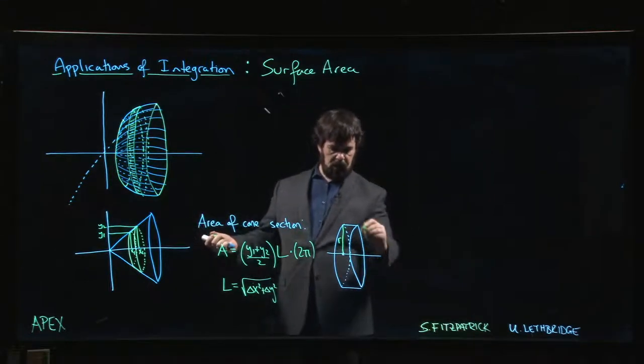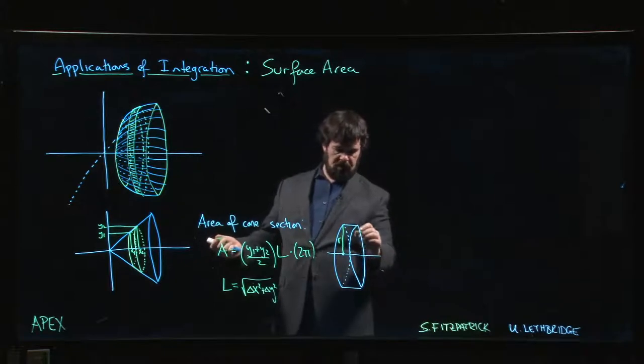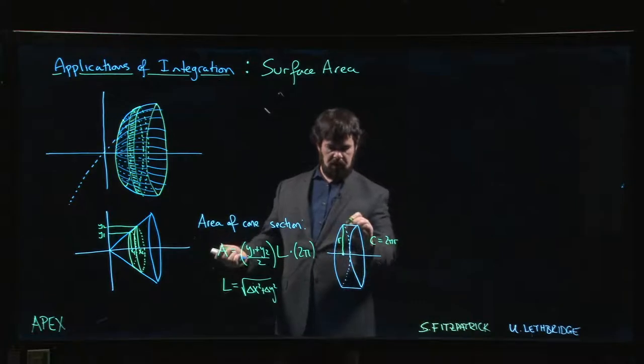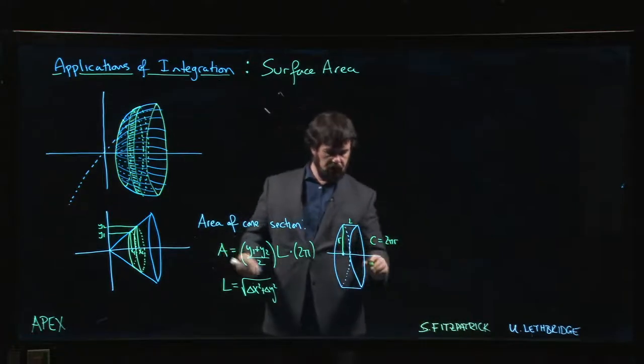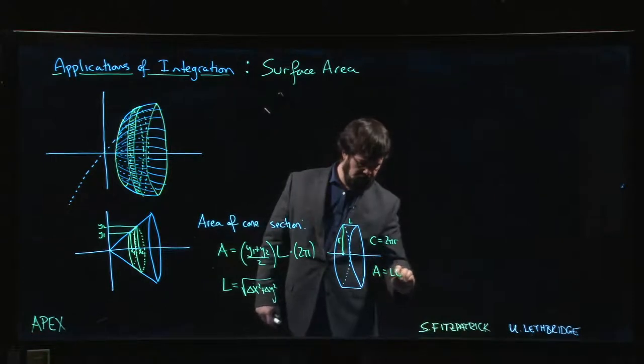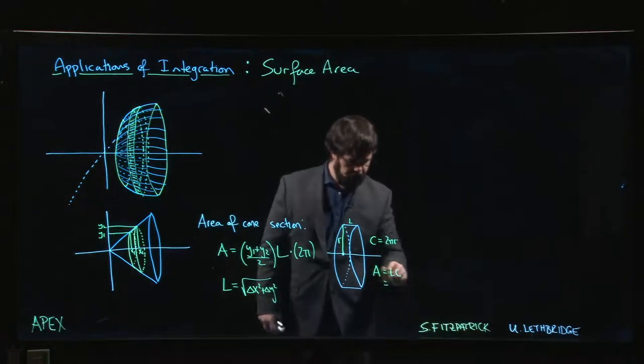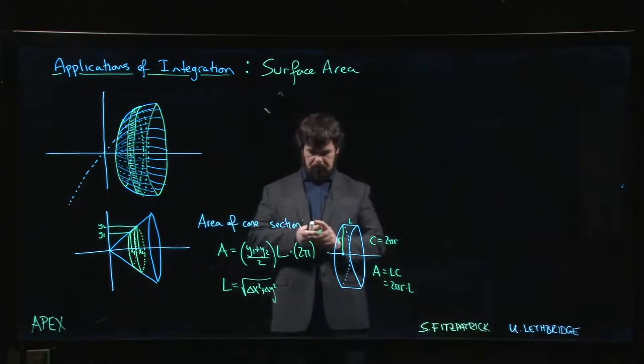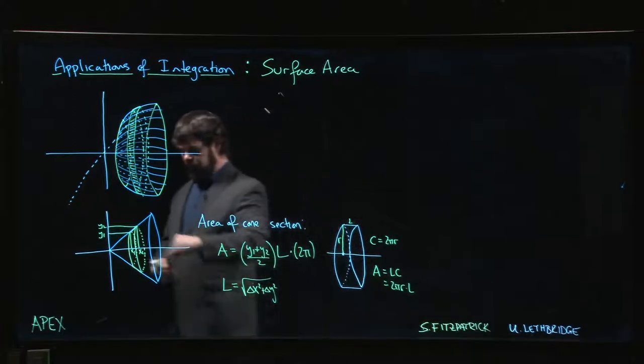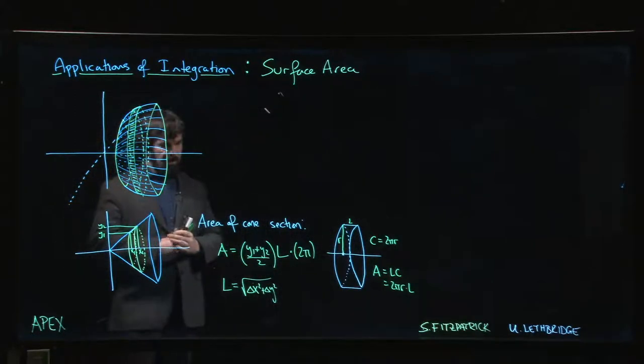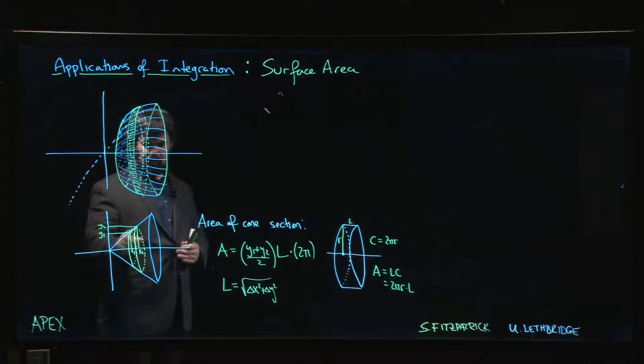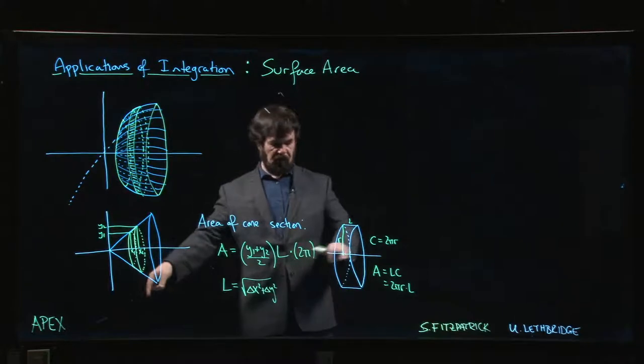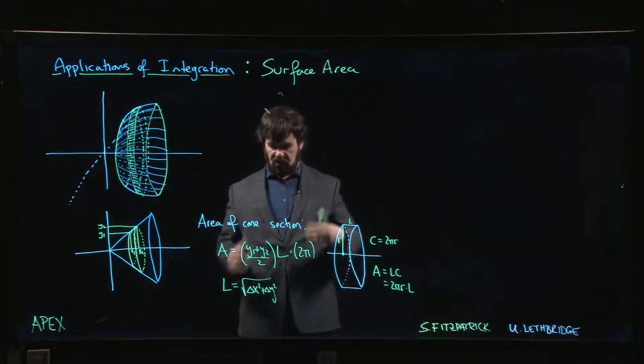One side of the rectangle is just going to be the circumference, which is going to be 2πr, and if we call that length L still, then the area is just going to be L times C, so it's 2πr times that L. And the only difference here is that if this thing is at an angle, then essentially what you're doing is you're taking the average of the small radius and the large radius to get the area of this cone section as compared to the area of a cylinder section, but it's the same idea.